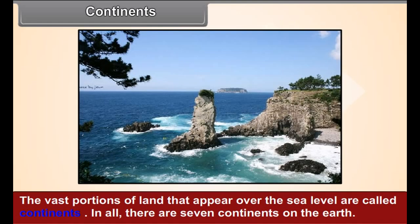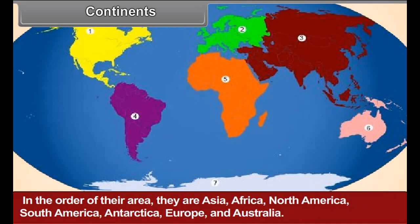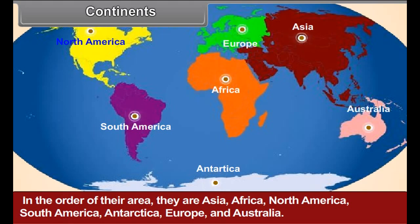Continents. The vast portions of land that appear over the sea level are called continents. In all, there are seven continents on the earth. In the order of their area, they are Asia, Africa, North America, South America, Antarctica, Europe and Australia.